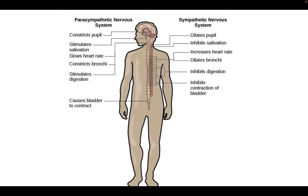Your parasympathetic system is also known as your rest and digest system. This is the calming system, while the sympathetic nervous system is your fight or flight — this part gets you ready for action. They work in conjunction with each other, and some people need to amp up more of the sympathetic versus the parasympathetic depending on what they need at that moment.